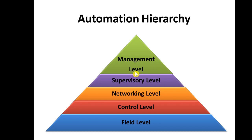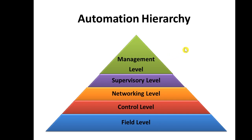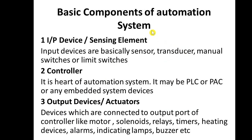For example, if we need to produce 100 products and 50 are already complete, the management level decides only 50 more are needed. It gives a signal to the supervisory level; the supervisory level checks how many products are completed and signals the control level to produce only the remaining 50 and then stop. This is how the automation hierarchy works.